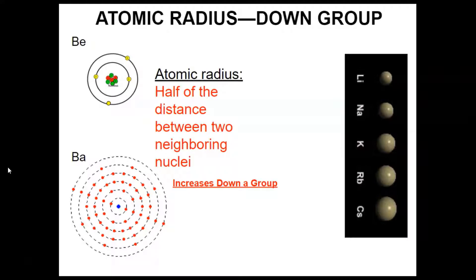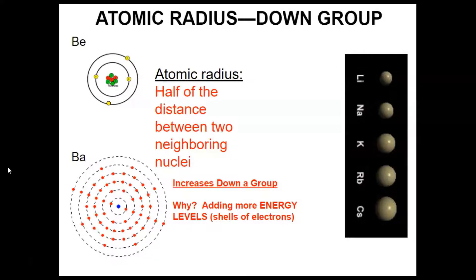As we go down a group from top to bottom, atomic radius increases. So if you look at group 2, barium is much larger than beryllium. As we go down a group, we're adding more energy levels — basically shells of electrons — and this makes it larger and larger. You can imagine this yourself: if you put on a light jacket, then another coat, and another coat on top of that, you're going to get bigger and bigger.